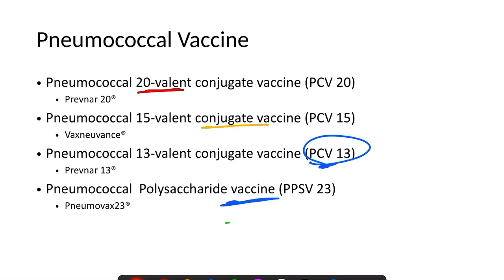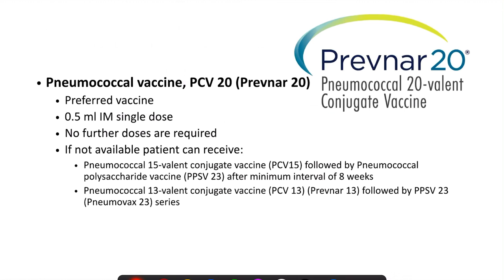The first vaccine recommended is the pneumococcal vaccine, which comes in various forms: 20-valent conjugate vaccine, 15-valent conjugate vaccine, 13-valent conjugate vaccine, and pneumococcal polysaccharide vaccine. Among these, the pneumococcal 20-valent conjugate vaccine, PCV20, brand name Prevnar 20, is usually the preferred one. If that vaccine is not available, we can use other forms. PCV20 is given as a single dose of 0.5 ml intramuscularly, and no further doses are required.